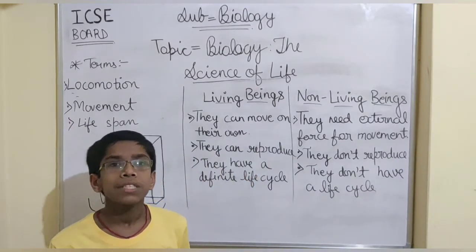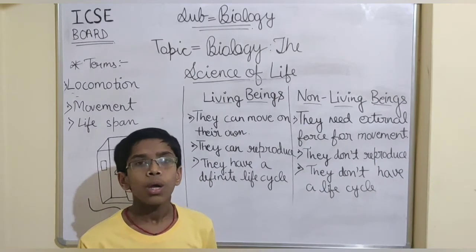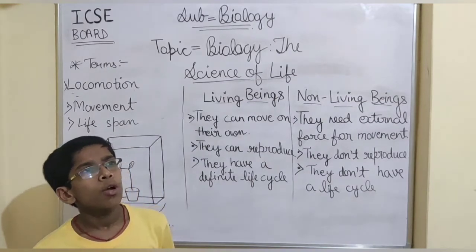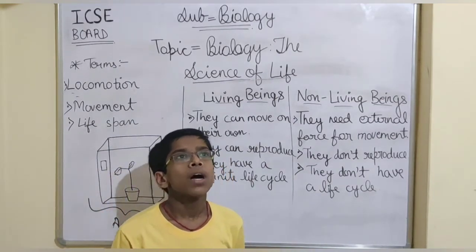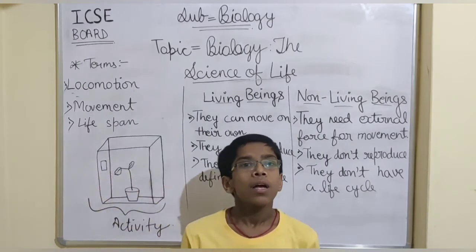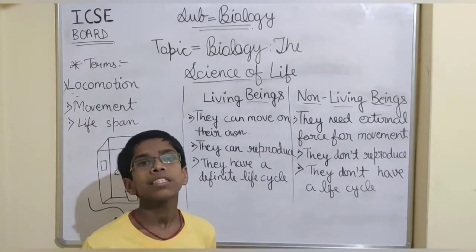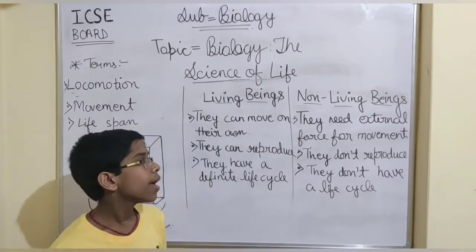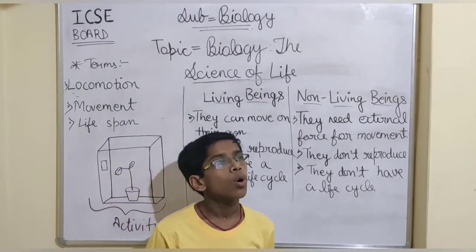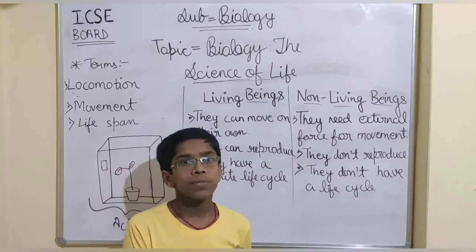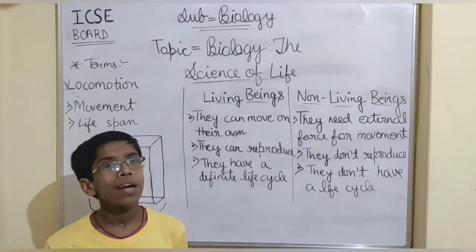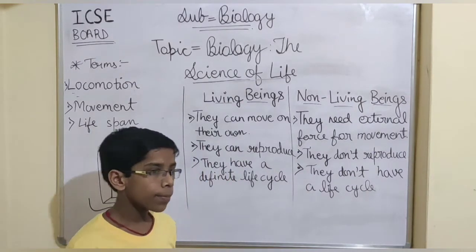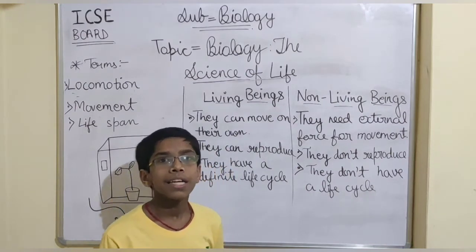Some plants also grow from stems, roots, or leaves. For example, sweet potato grows from adventitious roots — you will study about adventitious roots in higher classes. Onion and potato grow from stems. And Bryophyllum is a plant that grows from leaves — there is a leaf and at its edges it grows new plants.